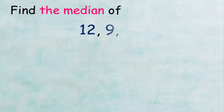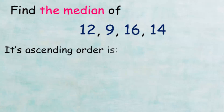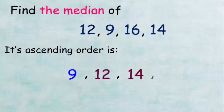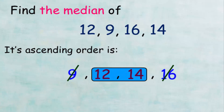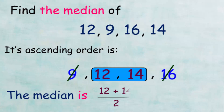Let's see our last example. In this example we want to find the median of the values 12, 9, 16, and 14. We arrange the values in ascending order, and by removing the numbers 9 and 16, we find that we have two values in the middle: 12 and 14. So the median will be 12 plus 14 over 2, which equals 26 over 2, equal to 13. Therefore our median is 13.